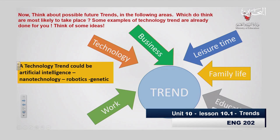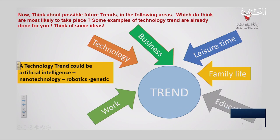Now, as you see here, we have many fields where possible trends can be seen. For example, we have technology, business, leisure time, family, life, education, and work. Can you come up with some ideas related to trends in these fields? For example, technology trends could be artificial intelligence, nanotechnology, and robotics. How about the rest of the fields — business, leisure time, family, education, and work? What are other future possible trends that can be found in these fields?